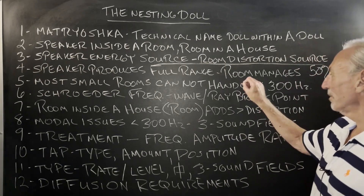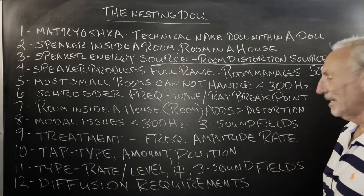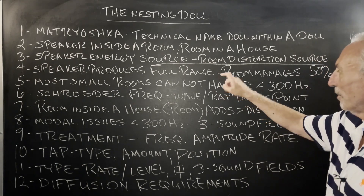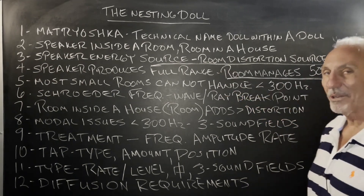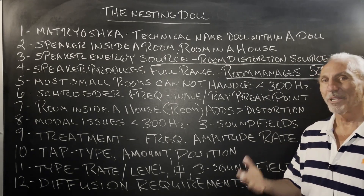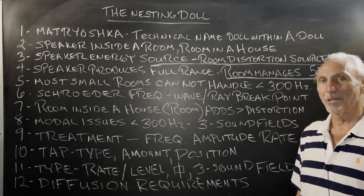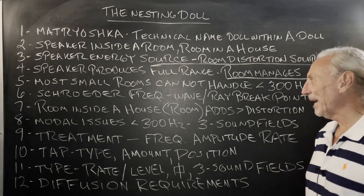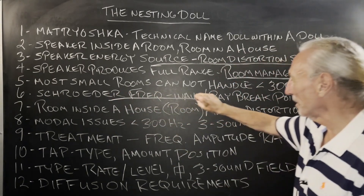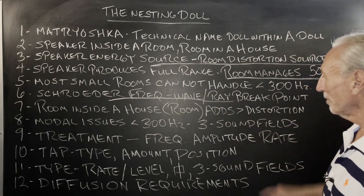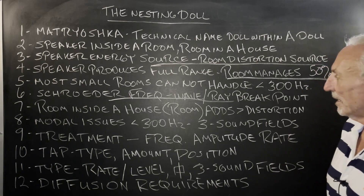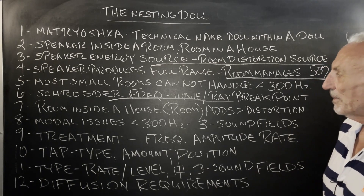Most small rooms cannot handle energy below 300 hertz. So the speaker is going to produce full range energy and the room's not going to like half of it approximately. You're really fighting the numbers here in an uphill battle when you're using this kind of situation. It's the Schroeder frequency, which is the breakpoint between wave and ray energy in your room — you can look that up.